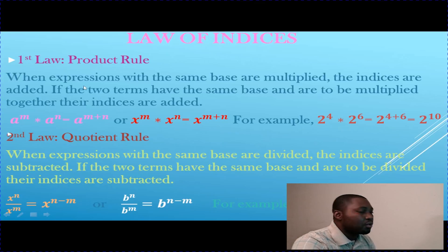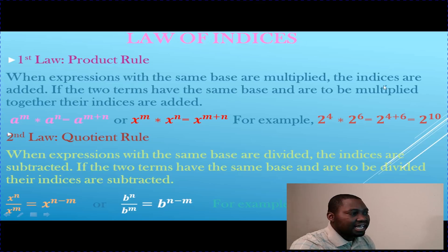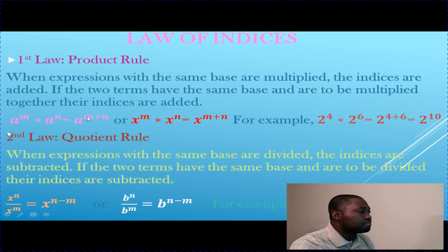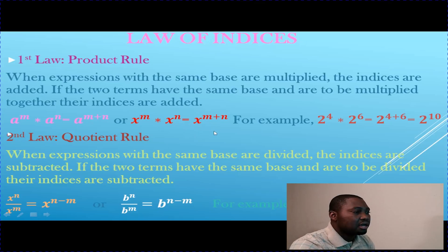The first law is the law of multiplication, otherwise known as the product rule. When expressions with the same base are multiplied, the indices are added. That is, if two terms have the same base and they are to be multiplied together, their indices are added. For example, a to the power of m multiplied by a to the power of n equals a to the power of m plus n. Similarly, x to the power of m multiplied by x to the power of n equals x to the power of m plus n.